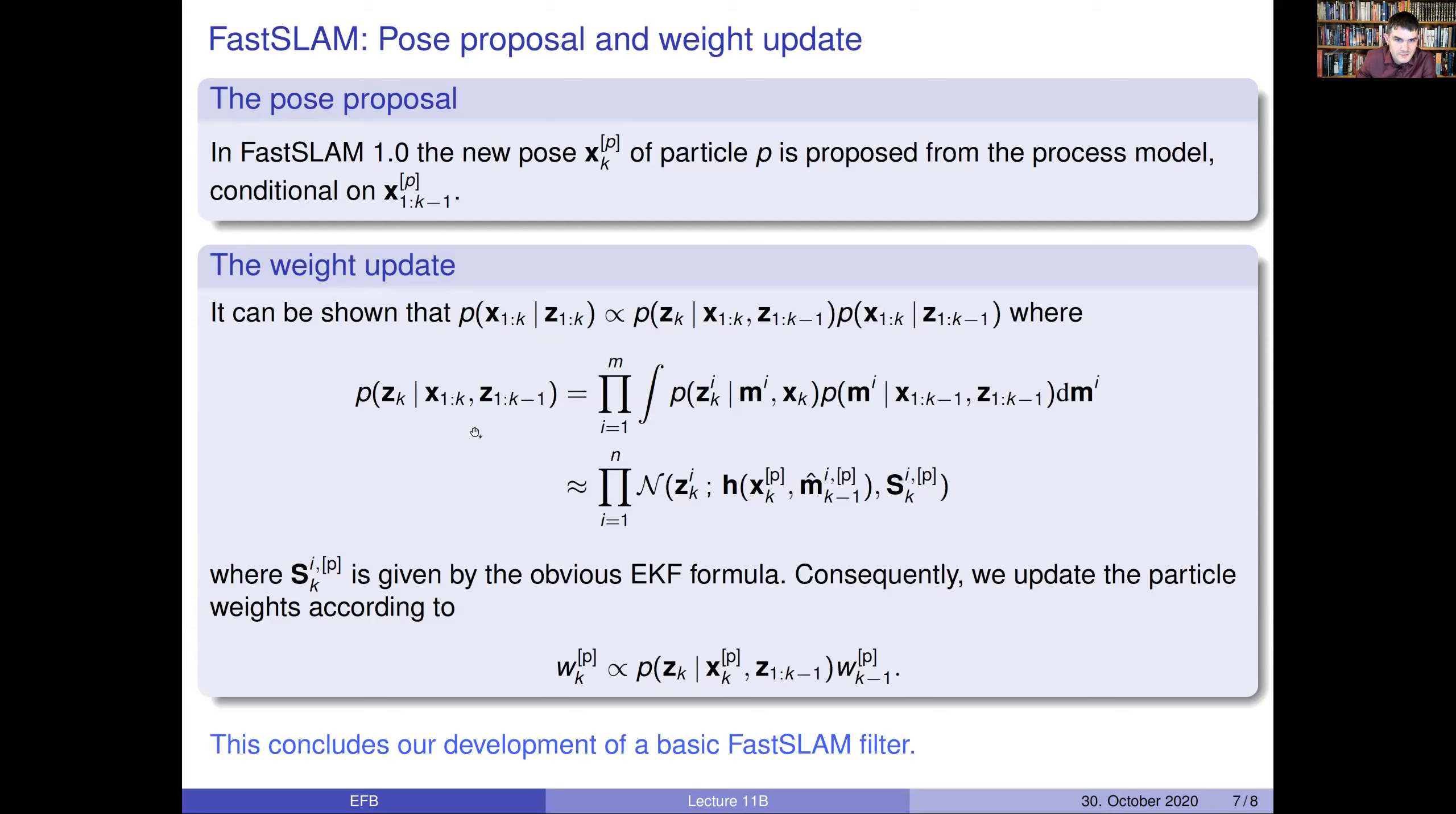So when you use the SIR filter in FastSLAM 1.0, then the weight update becomes just a multiplication with the likelihood. And this likelihood, we can factorize this. And then you get integrals of the unknown landmarks for every landmark. So this landmark becomes sort of a nuisance variable that you have to integrate out to get the contributions to this likelihood. And all these integrals become by means of the product identity becomes Gaussians that are easy to evaluate. So then we have the update as well. And this is really all there is in a basic FastSLAM particle filter.